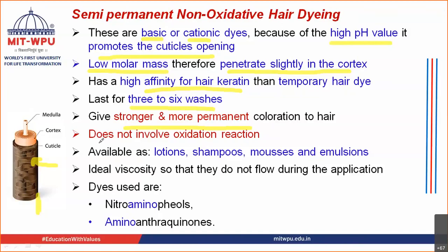If you want to change the color of your hair for about a week, 10 days, or 15 days, then you can go for semi-permanent non-oxidative hair dyeing system. These are more strong and more permanent coloring system compared to temporary non-oxidative. Please remember they also do not involve oxidative reaction. Your temporary and semi-permanent both do not involve oxidative reaction. They can be formulated in the form of shampoo, lotions, mousses, or emulsions.